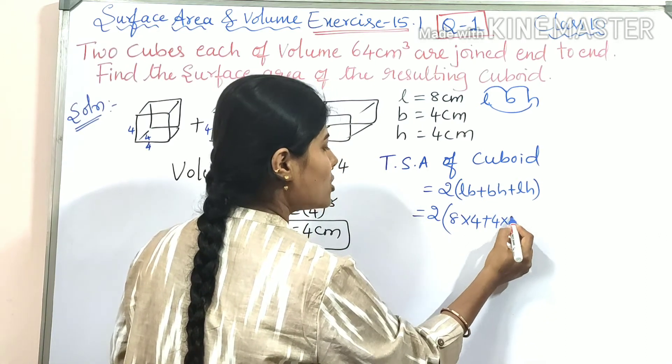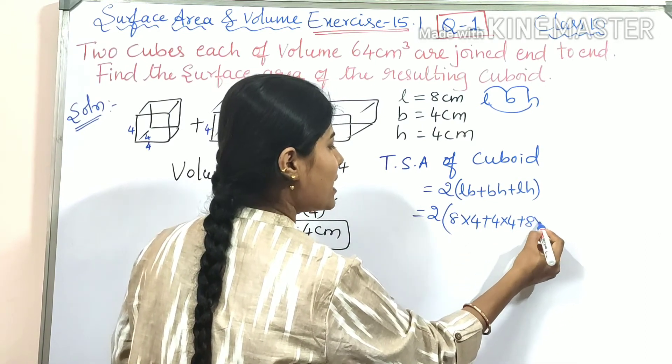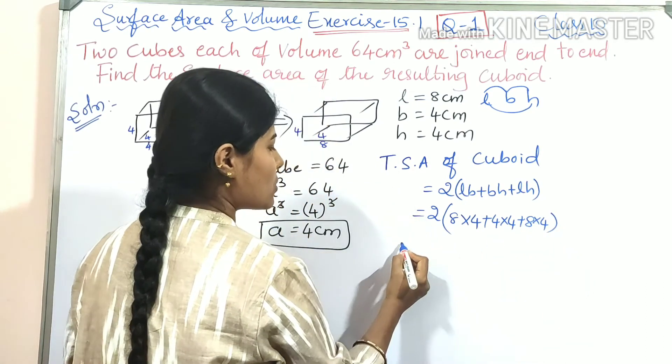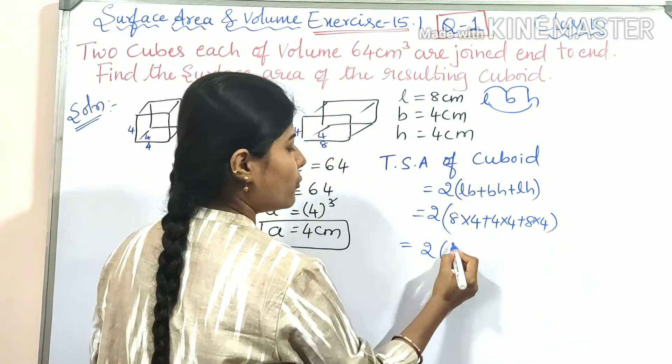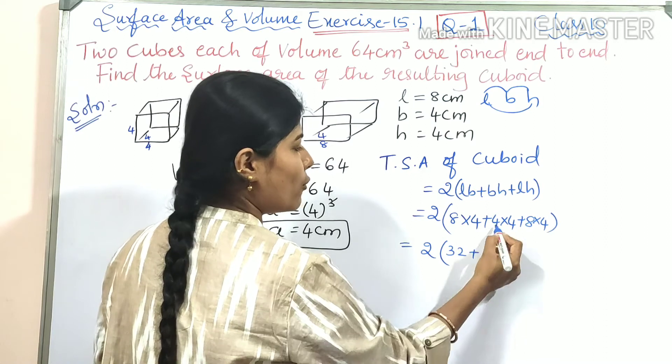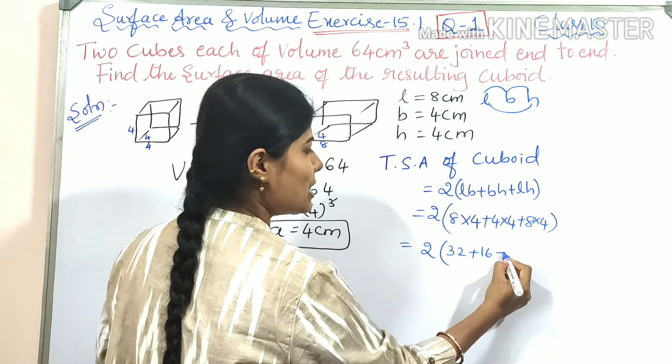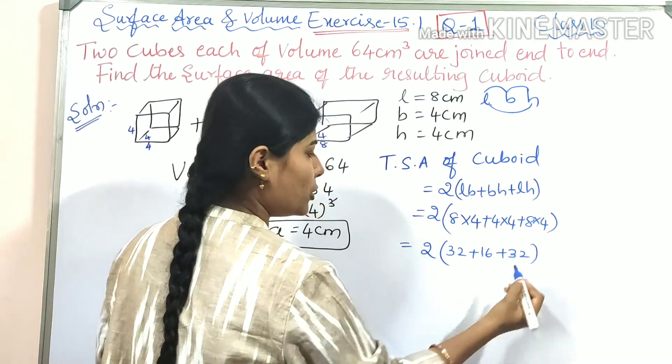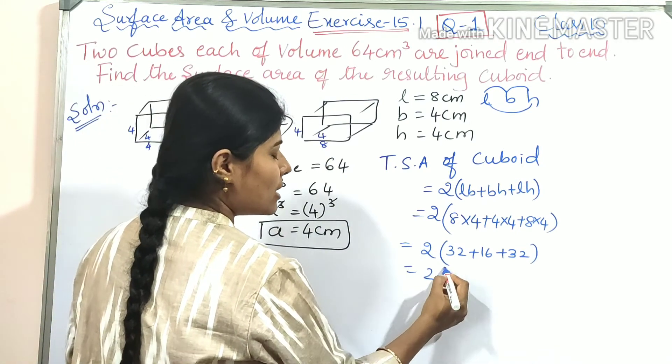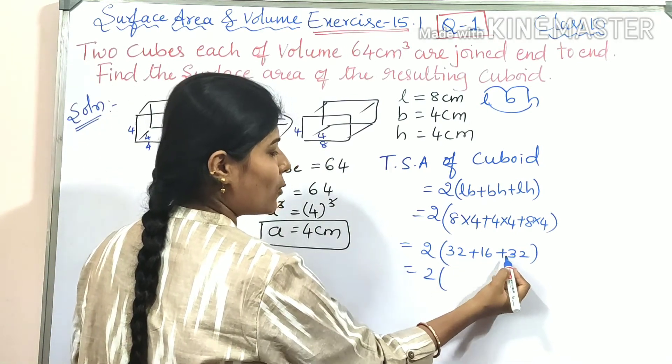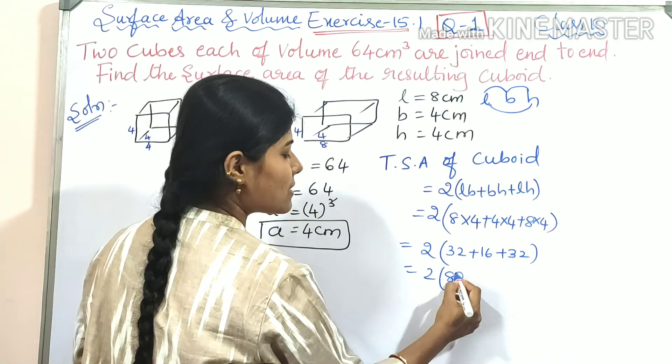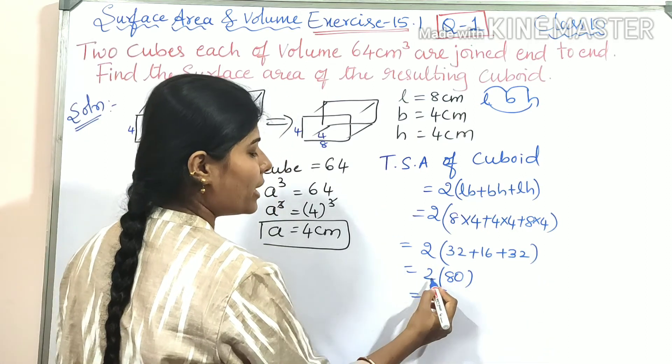On multiplying: 8×4 = 32, 4×4 = 16, 8×4 = 32. Adding these: 32 + 16 + 32 = 80. Multiplying by 2: 2×80 = 160.